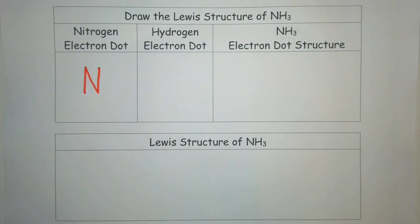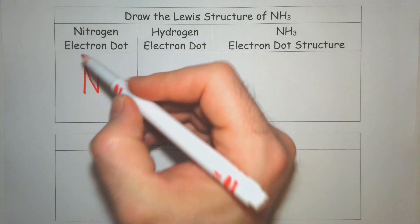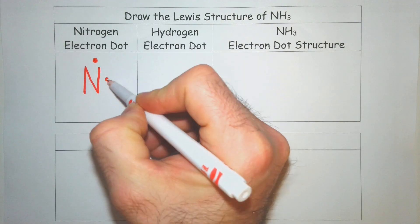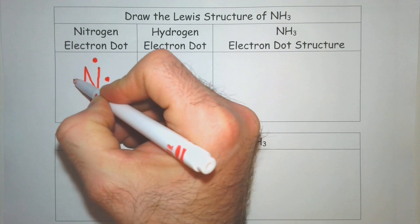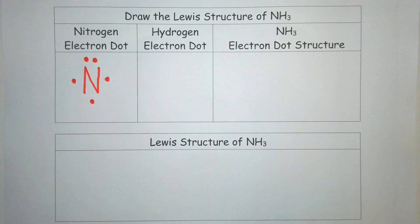The first one we're going to do is nitrogen. Nitrogen is a group 15 element, so it's going to have 5 valence electrons. So let's draw those electrons. Remember, they do not pair until at least the 5th electron.